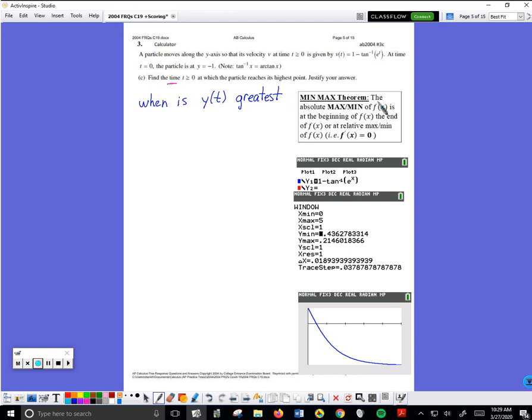So I applied the min-max theorem to this situation. The max of in this case y(t) is going to be where y(t) begins, where y(t) ends, or at a relative max of y(t). Key thing right here in bold is I'm looking for where the derivative of y, so looking for v(t) is equal to zero. We've practiced these before quite a bit. So I want to find where v(t) is equal to zero.